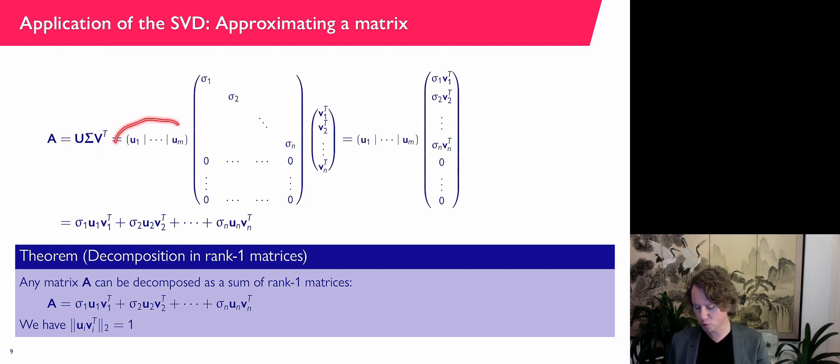And you can see that you can write A as a sum of rank 1 matrices. And it is not only a sum of rank 1 matrices, but each of the substituted ones, U_i, V_i transpose, have two norm 1.